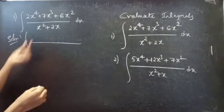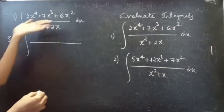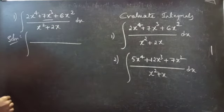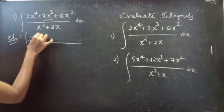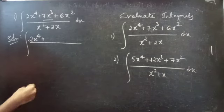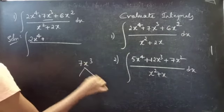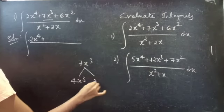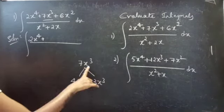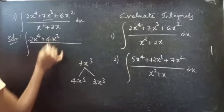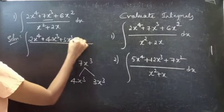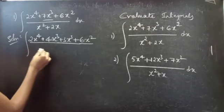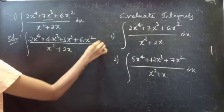Here in the denominator we have x² + 2x. What we are going to do is write the numerator in terms of x² + 2x. So we are going to split 7x³ as 4x³ and 3x³, since 4x³ + 3x³ = 7x³. We write the third term as it is divided by x² + 2x.